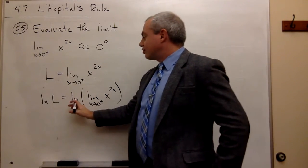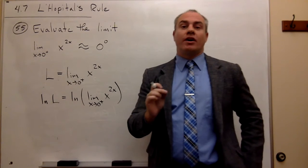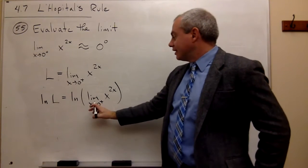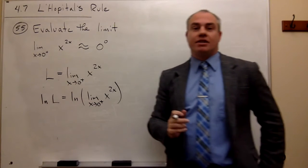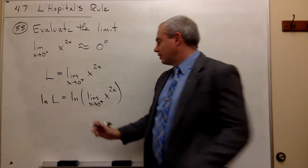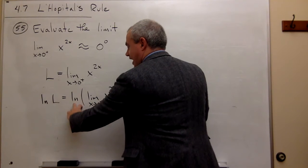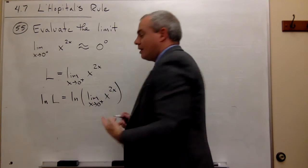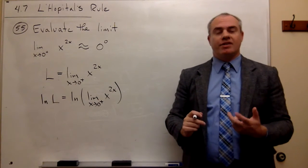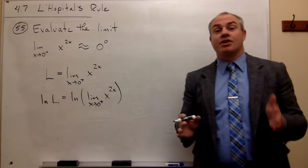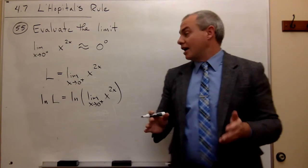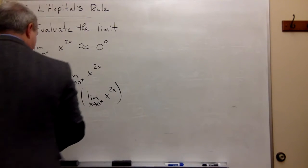Now, natural log is a continuous function, and limits are able to move in and outside of continuous functions. In other words, I'm able to flip this natural log and this limit sign because ln is continuous. If it wasn't a continuous function, I can't do that. But because I know that ln is continuous, I'm able to. So let's make that switch.